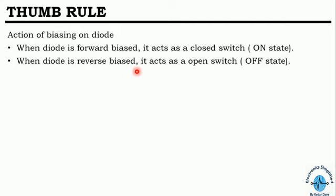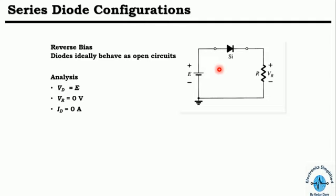Looking at diode connections, in a series diode configuration the diode is placed in series with the supply. If the diode is ideal, there is no voltage drop across it. All voltage drop appears across the resistor only, so Vd equals E, Vr equals 0, and Id equals 0 amperes.